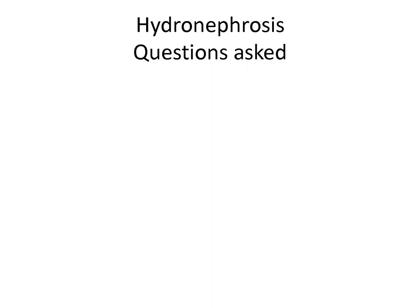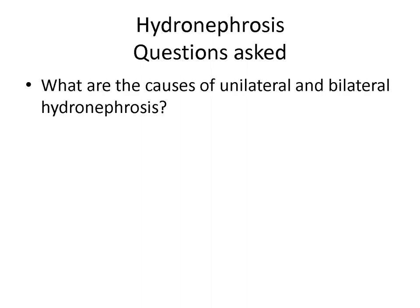Here you can be asked about what are the different causes of unilateral and bilateral hydronephrosis. Unilateral hydronephrosis can be caused because of congenital reasons like a ureterocele or a PUJ obstruction due to aberrant renal vessels. There can be etiologies inside the lumen like stones, or causes in the wall of the ureter like stricture, or outside the ureter leading to compression by carcinoma of the cervix or a retroperitoneal tumor.